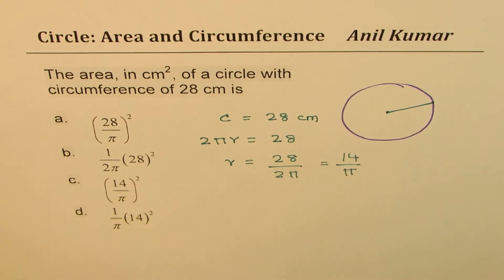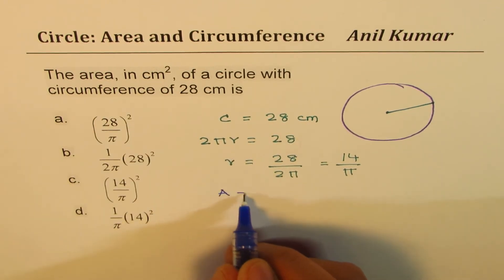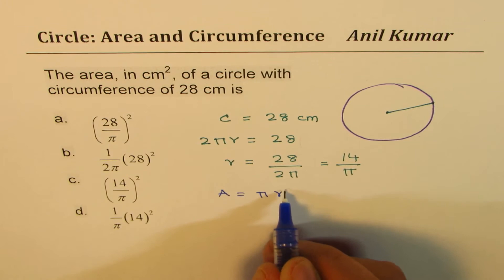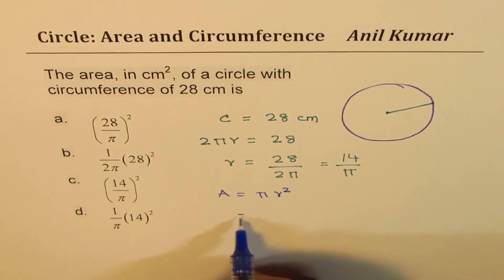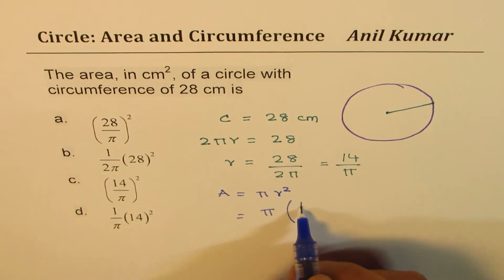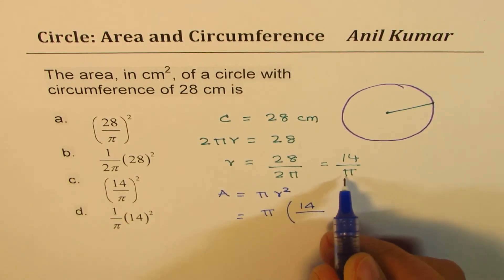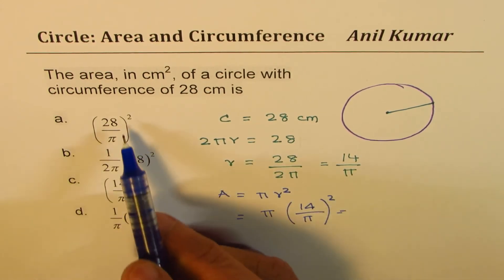And what do we need to find? Well, we need to find area, right? So area formula is πr². So let me substitute the value of r from here, which means π times (14 over π) whole square.